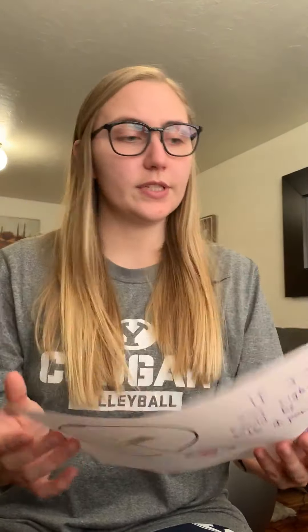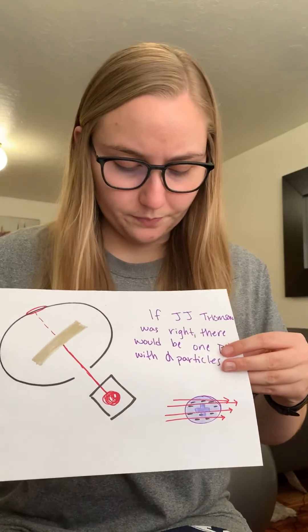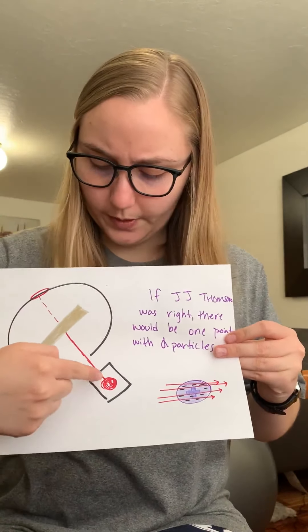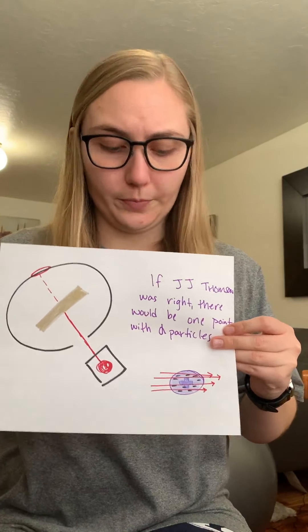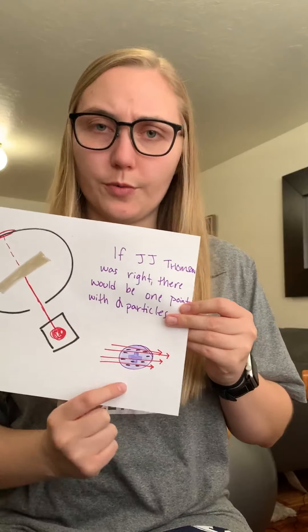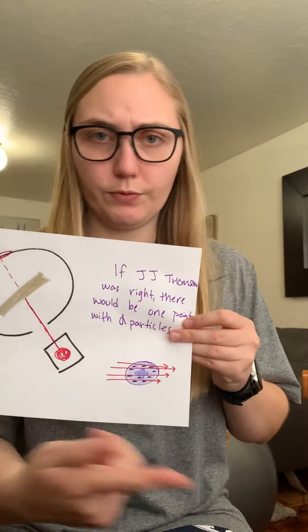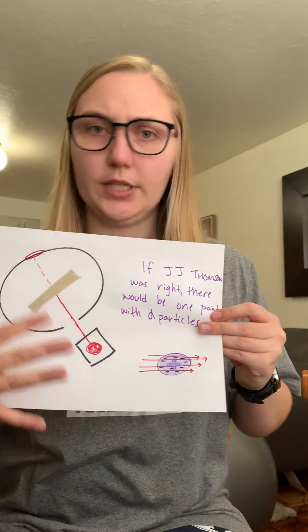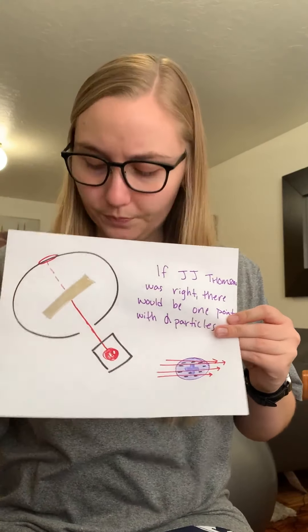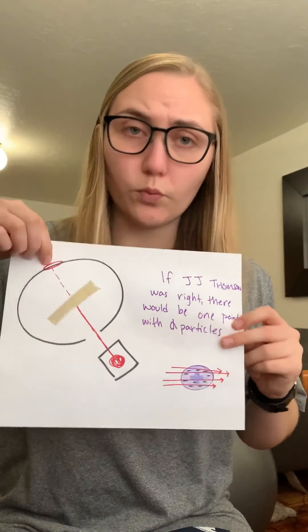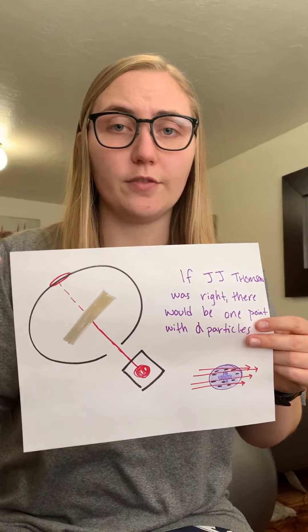If JJ Thompson was correct, this is the result they expected: the alpha particles would go straight through the gold foil. Because if the atom is just a diffuse cloud, those alpha particles are just going to move straight through — they're not going to be repelled anywhere or clash with anything. So they expected to see only one spot on the screen hit by the alpha particles.